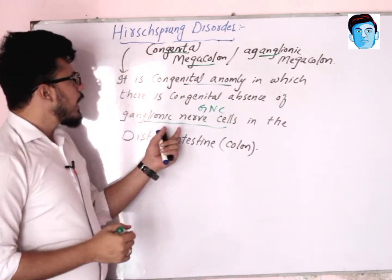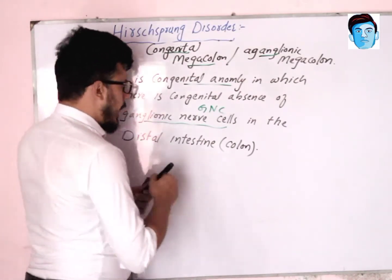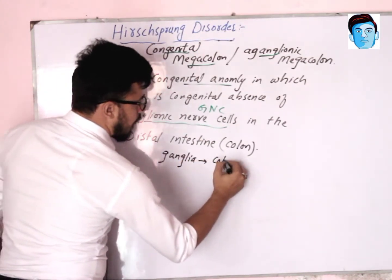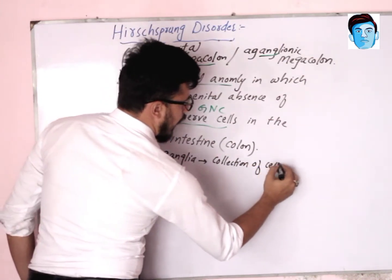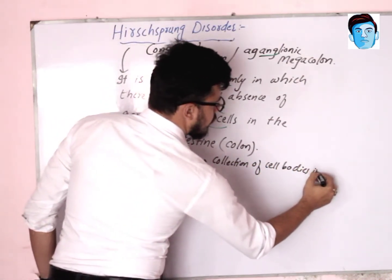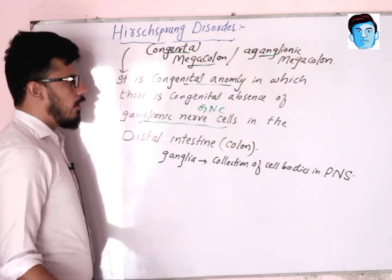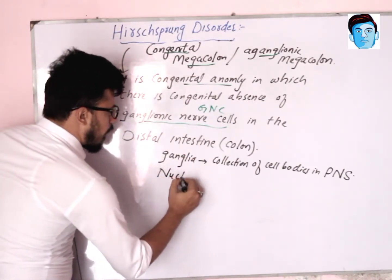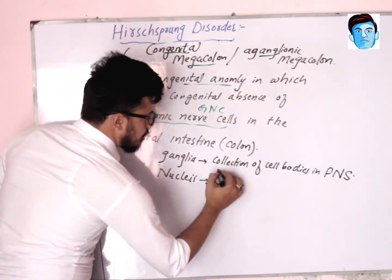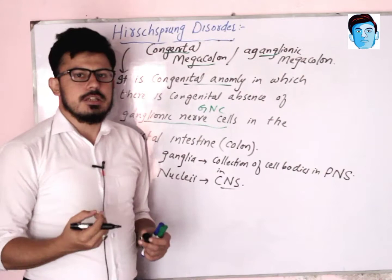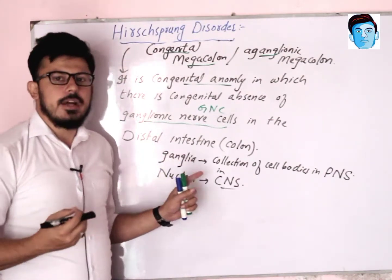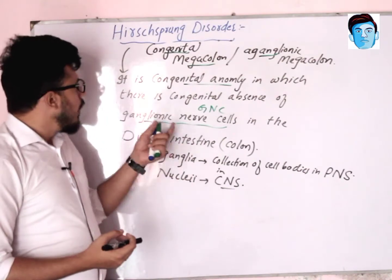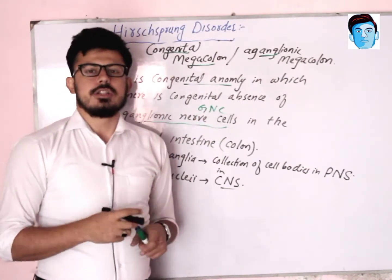Ganglia is the collection of cell bodies in the peripheral nervous system, while nuclei is the collection of cell bodies in the central nervous system. When there is a cluster of cell bodies in the peripheral nervous system that is called ganglia, but if there is a cluster of cell bodies in the central nervous system, that is termed nuclei.